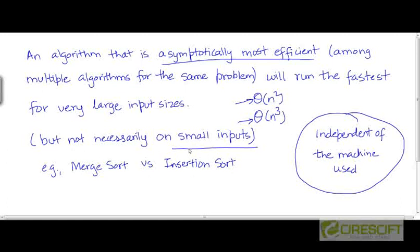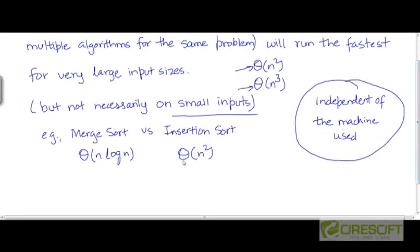But that may not necessarily happen on small inputs. For example, we have seen that the worst-case complexity of merge sort is theta of n log n, and the worst-case complexity of insertion sort is theta of n². So comparing these two, clearly merge sort is asymptotically more efficient. So for large input sizes, merge sort is going to run faster than insertion sort.